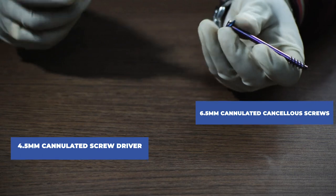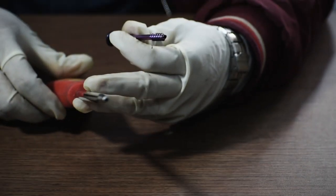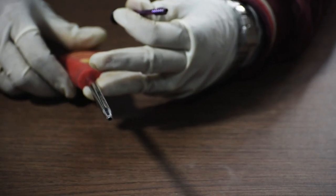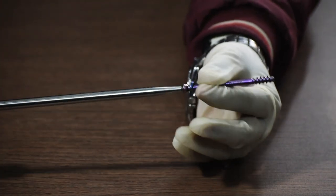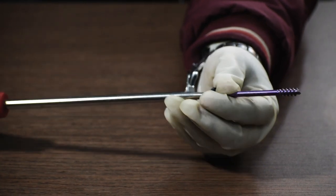And then take a 6.5mm cannulated canceller screw of measured length, with or without washer, depending upon the choice of the surgeon. And then use a 4.5mm cannulated screwdriver to fix this screw through the guide wire. So, that will be all for the process of DHS that is dynamic hip screw fixation with 6.5mm derotation screw system.